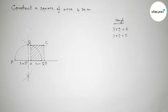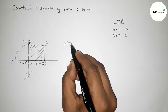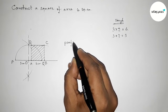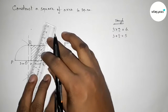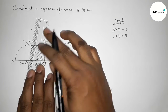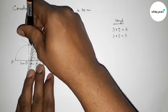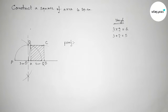Now I'm going to prove that the area of the square equals 6 square centimeters. First we have to join OD — joining the points O and D.